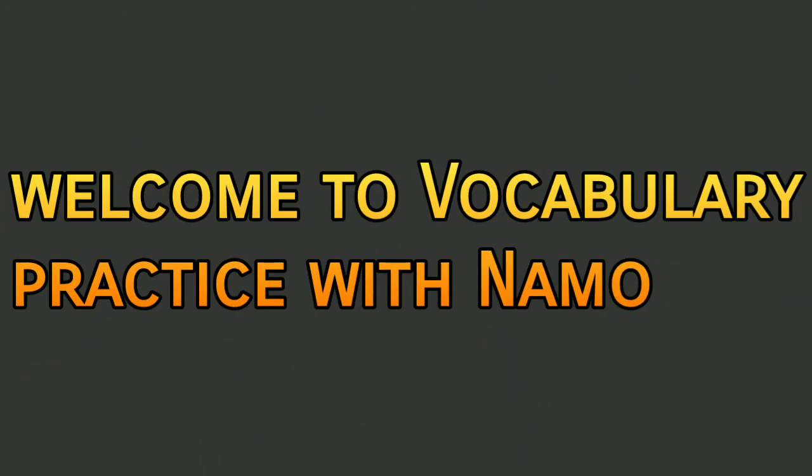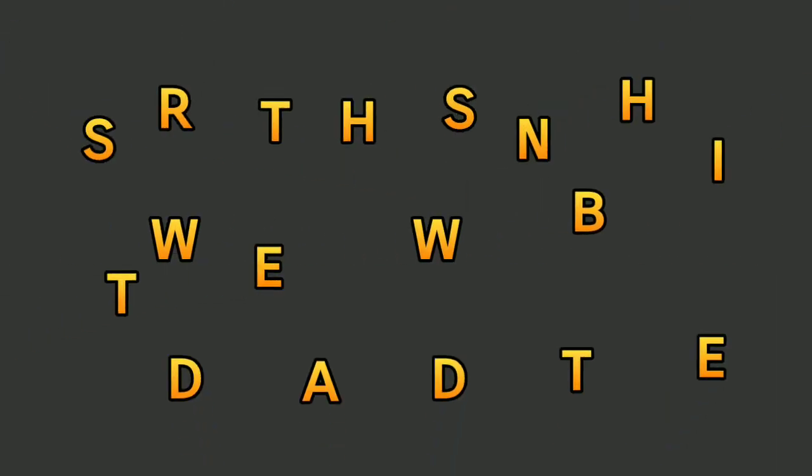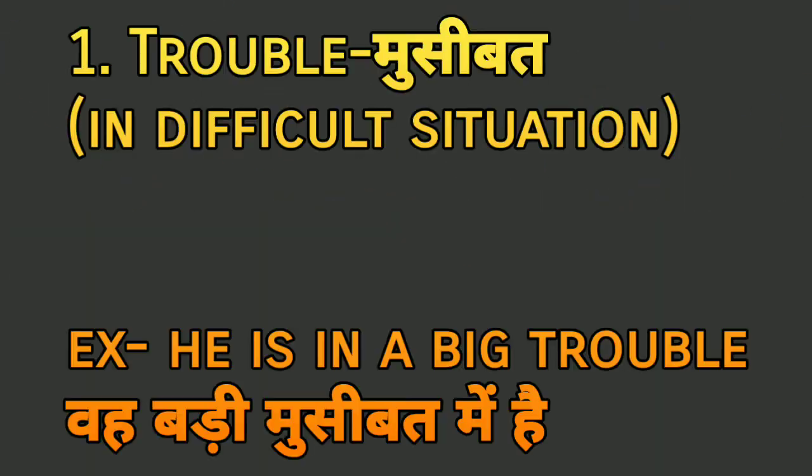Welcome to vocabulary practice with Namo. Today we have words that end with '-ble'. Let's start. The first word is 'trouble', which means 'musibat' in Hindi — a difficult situation. For example: 'He is in a big trouble' — woh badi musibat mein hai.